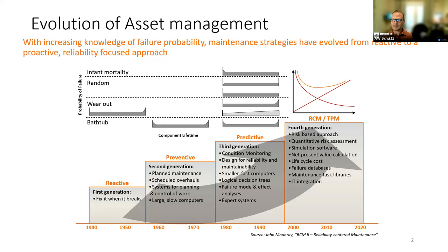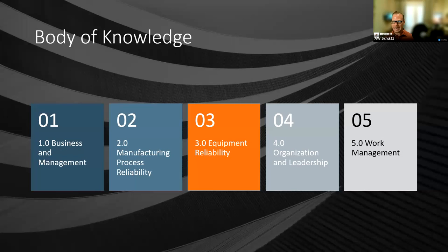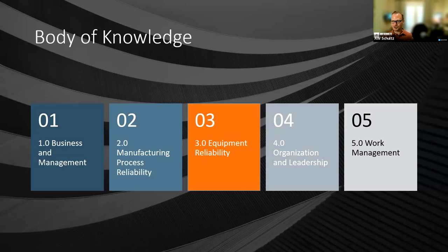The body of knowledge — and if you've joined any of my classes before, I began with business and management and the manufacturing process. Today is equipment reliability. You also have organizational leadership and work management. When you think about what the Society of Maintenance and Reliability Professionals are looking for in future leaders, there is a portion of equipment but it's also tied to leadership and the people part of it. So as you take an exam, you're thinking about what is a good leader to make decisions on as far as how we're managing equipment, because we need people to help manage that.